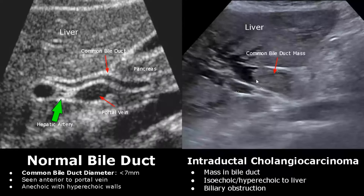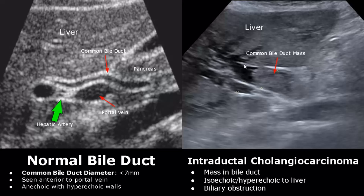Cholangiocarcinoma refers to bile duct cancer. The first type is intraductal cholangiocarcinoma, in which a mass is seen in the bile duct. It can be either isoechoic or hyperechoic to the liver, and the bile duct is obstructed as well.